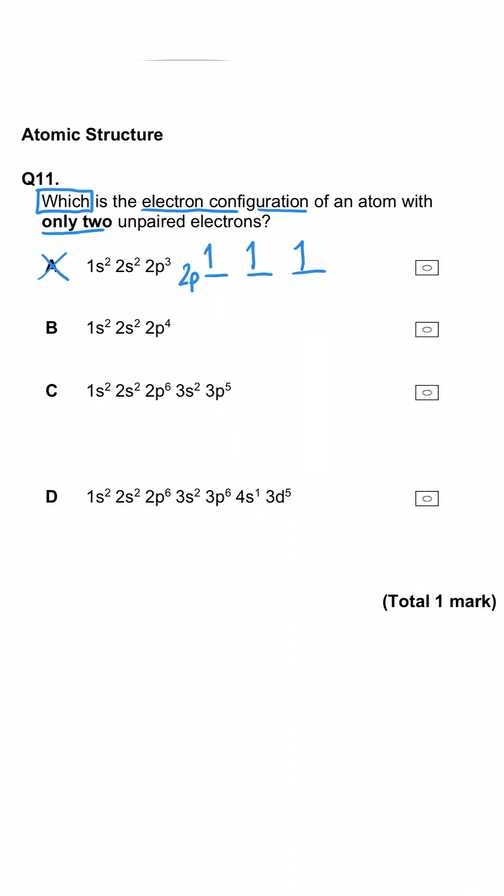So A is the wrong answer because it will have three unpaired electrons. For B we've got four electrons in the p subshell, we'll have two in the first orbital and one in each of the next two. So this is the correct answer because it will have only two unpaired electrons.